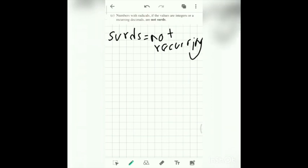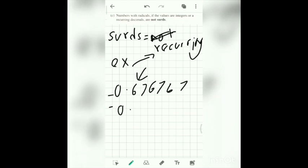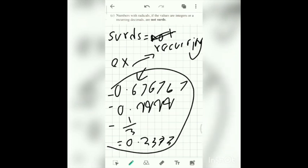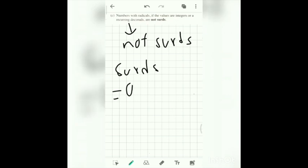Recurring, yeah, recurring is, example of recurring is 0.67676767, 0.9999, 1 over 3 that same as 0.33333. This number, recurring number that is not surds. So recurring decimals are not surds. For surds is number that differs like 7, 8, 6 and so on that is not recurring.